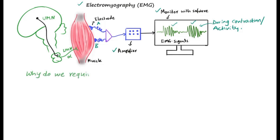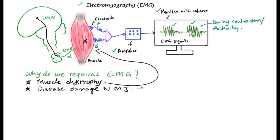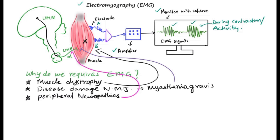When do we require EMG recording? Mainly when a patient is found with any problem with muscle weakness, called muscle dystrophy, or any problem with the neuromuscular junction, such as myasthenia gravis, or any problem in the alpha motor neuron supplying to the muscle belly, for example, peripheral neuropathy.